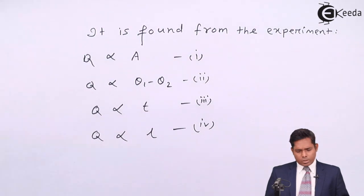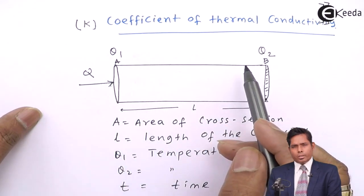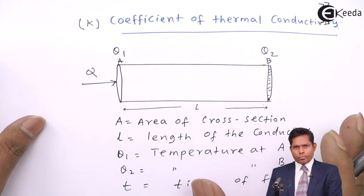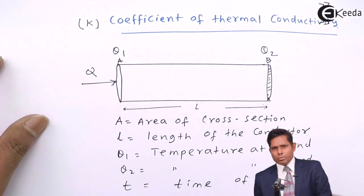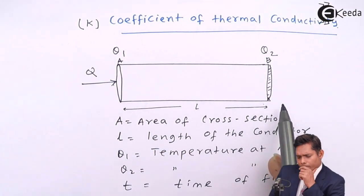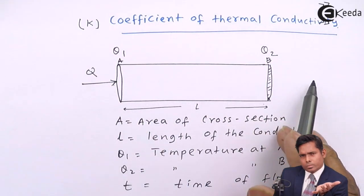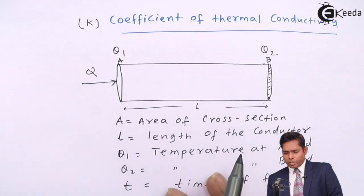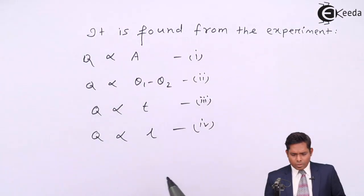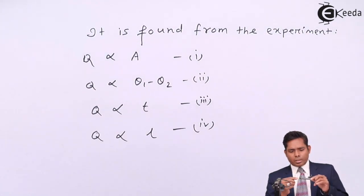The quantity of heat that flows through the conductor depends on a few factors. Higher temperature difference between the two ends means greater heat flow — more heat passes in less time. More time allowed means more heat flows. The heat is inversely related to the length: if the conductor is longer, less heat flows; if shorter, more heat flows. It is also directly proportional to the area of cross-section — a larger area means more heat passes per second.